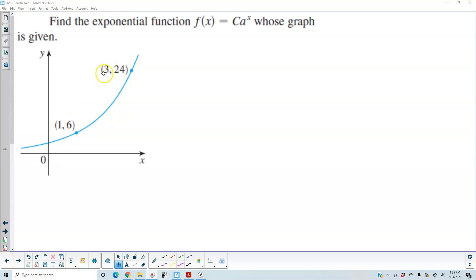We have one that's 1 and 6, the other one is 3, 24. So the first thing we can do is we're going to look at the ordered pair 1, 6. And then what we're going to do is we're going to plug it into the function f of x,